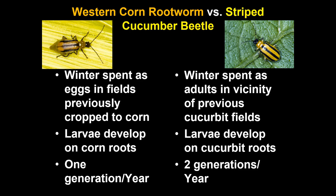To review these two common insects: western corn rootworm spends the winter as eggs in fields previously cropped to corn, whereas striped cucumber beetle spends the winter as an adult in the vicinity of a previous cucurbit or squash family field. This difference in habit is why one can be controlled with rotation and the other cannot. The larvae of corn rootworm develop on corn roots; the larvae of striped cucumber beetle develop on cucurbit roots. There is only a single generation per year of western corn rootworm and two of the striped cucumber beetle.